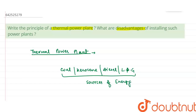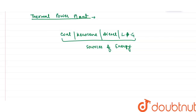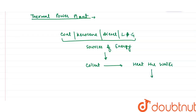In the first step, we collect these sources of energy. Then these sources of energy are used to heat the water. When we heat the water, it changes into steam — so water is converted into steam.